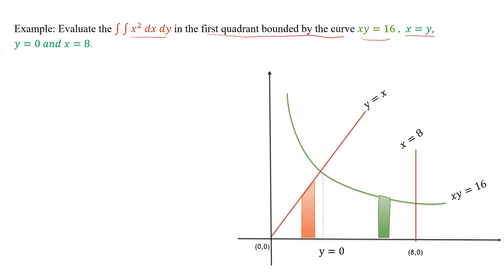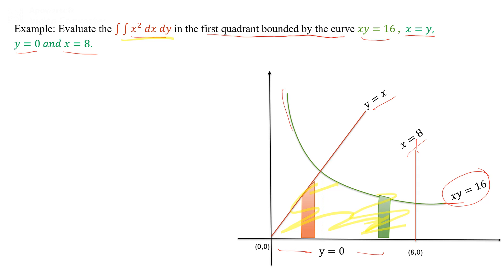Next example: evaluate the double integral of x squared dx dy over the region in the fourth quadrant bounded by the curve xy equal to 16, the line y equal to x, the line y equal to 0, and the line x equal to 8. Plotting the graph with xy equal to 16, y equal to x, y equal to 0, and x equal to 8, the bounded region is identified.